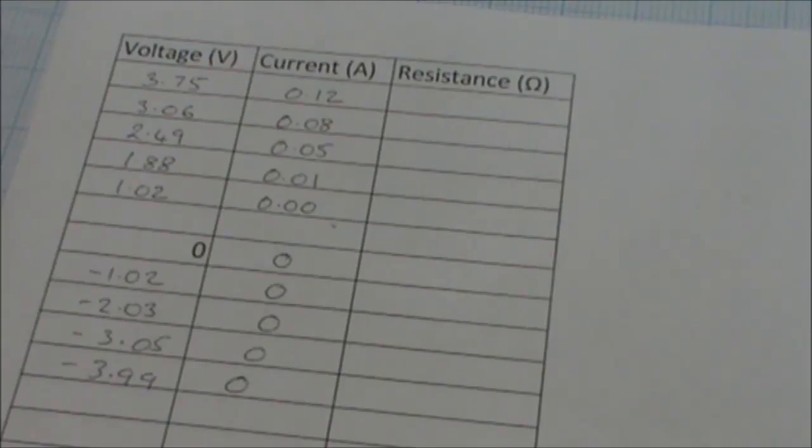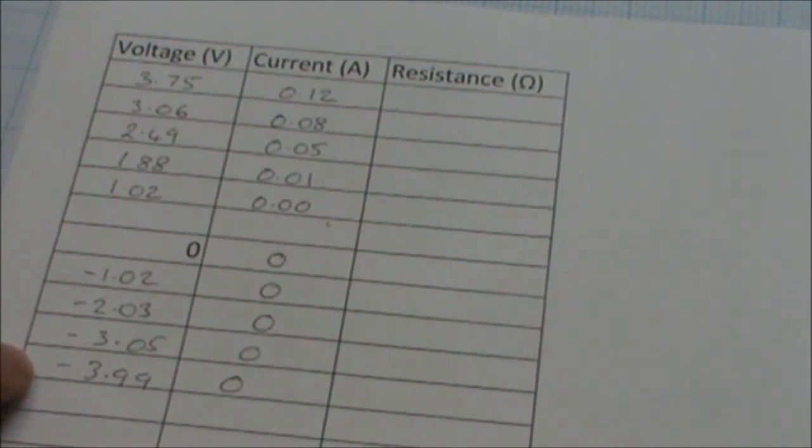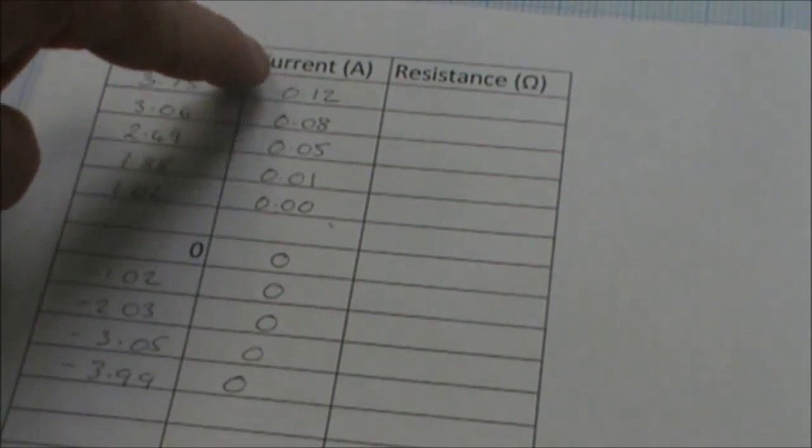So there are our full set of results from plus 3.75 down to minus 3.99 and we can see the current changes.